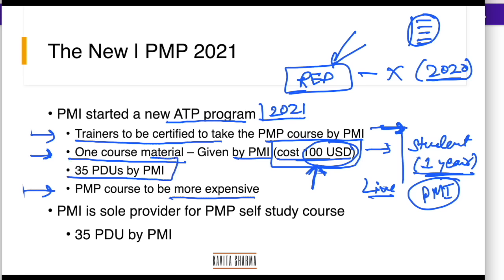The 35 PDUs which I was providing to you earlier through my training would now come via PMI directly. So to summarize the two main changes: one, a trainer needs to be certified by PMI — there has to be an ATP trainer certification; two, there is only one course material, access to which is provided by your trainer on the PMI website, and PMI is going to give you 35 PDUs directly from their fulfillment site.